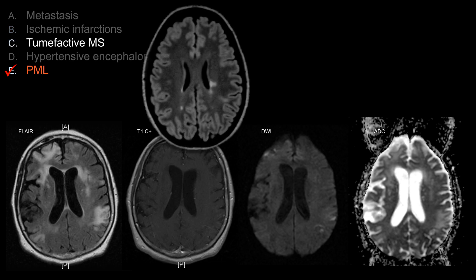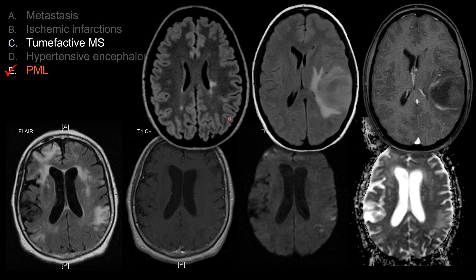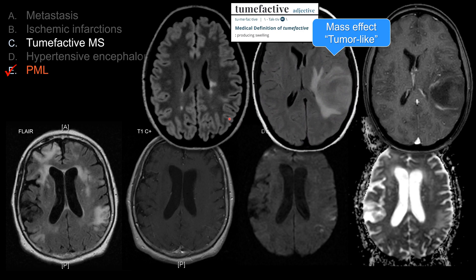For tumefactive MS, this is an example of a patient with MS — notice the Dawson finger lesions as well as some lesions involving the white matter. You can have tumefactive MS, which literally means mass-like, so you will have mass-like, tumor-like demyelinating disease. Sometimes you can have a standalone tumefactive demyelinating lesion. Classically, the enhancement tends to be incomplete rim enhancement or horseshoe enhancement, which distinguishes tumefactive MS from PML.